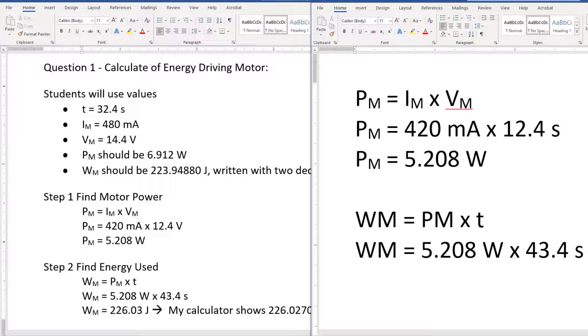Enter, and then again the energy of the motor equals, and then I'm going to say 226.03. I'm going to leave it at that even though my calculator said 226.027000. I'm going to put in only two decimal places, joules. That is how you do it.